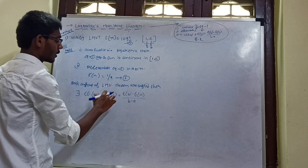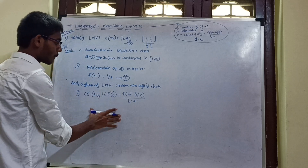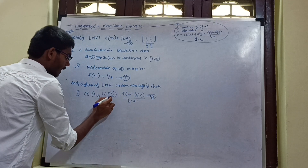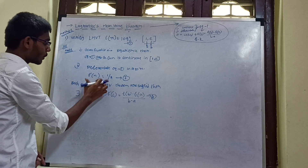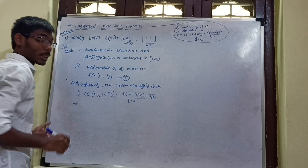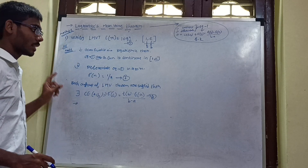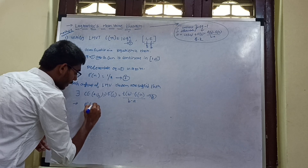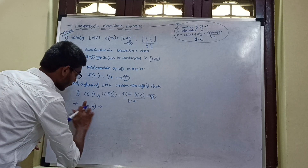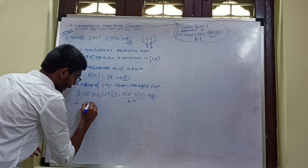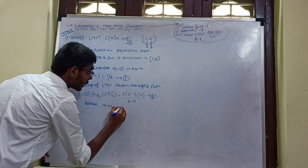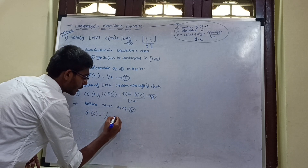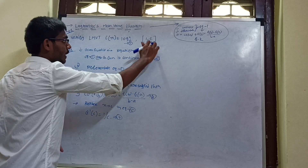So f'(c) = [f(b) - f(a)] / (b - a). Put this as equation 3. We express f'(c) using equation 2. Replacing x with c in equation 2, we get f'(c) = 1/c. Put this as equation 4.